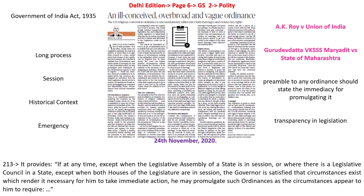The first article is titled 'An ill-conceived, overbroad and vague ordinance.' This article speaks about two important issues. One is the ordinance making power of the governor. The second is about the Uttar Pradesh anti-conversion law. What this anti-conversion law is has been explained in a video from 24th November 2020. Our focus today would be on the ordinance making power of the governor.